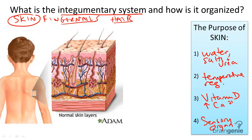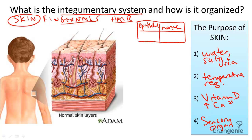So what is skin made of? Four types of tissue. One is called epithelial tissue. It also contains nerve tissue, muscle tissue that enables movement, and connective tissue for protection.